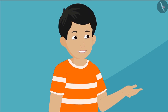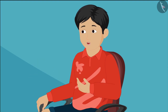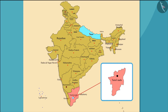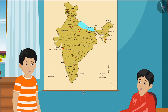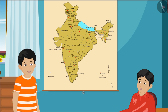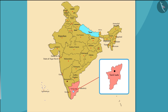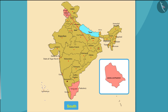In these holidays, I am going to Jammu and Kashmir with my parents. Oh wow! And I am going to Tamil Nadu with my family. But where is Tamil Nadu? Look at this map carefully — Tamil Nadu is a southern state of India, and this is Jammu and Kashmir, where you are going for the holidays.